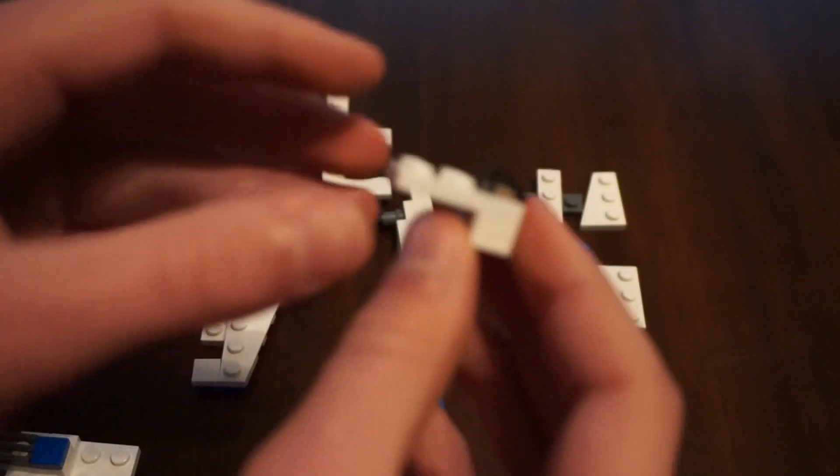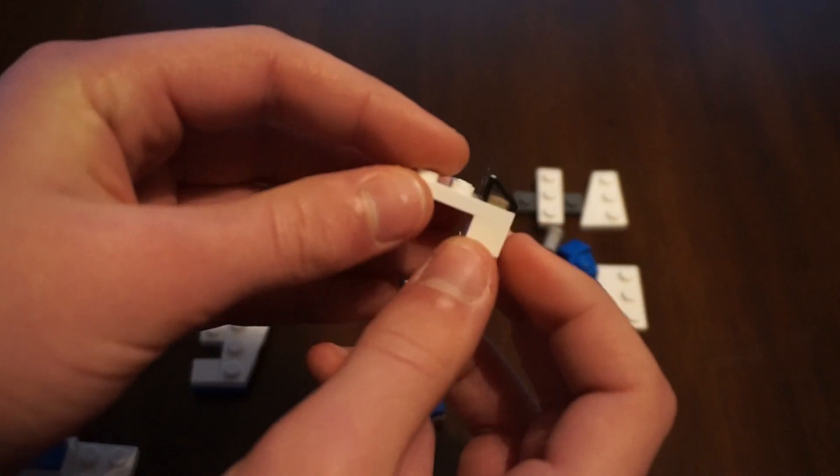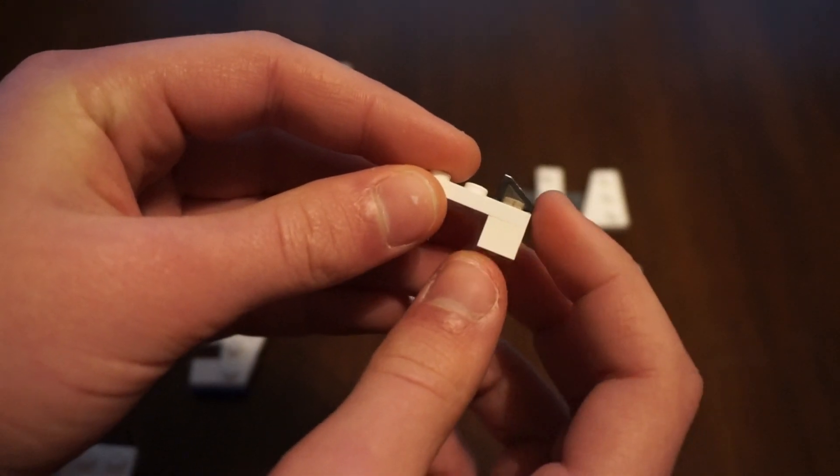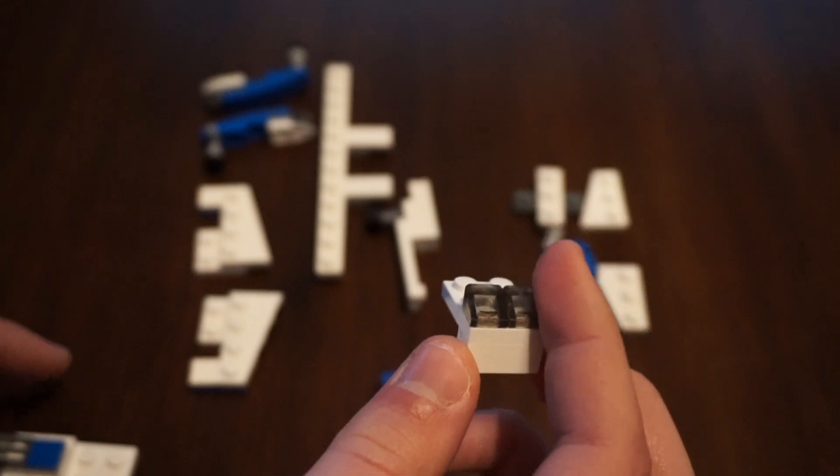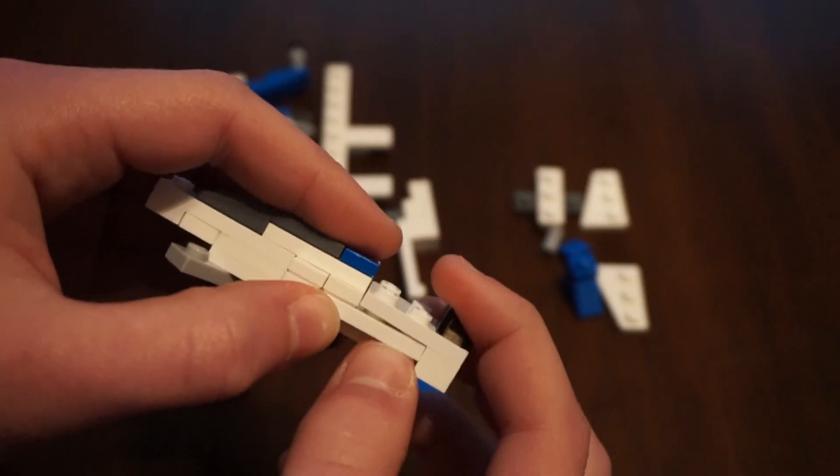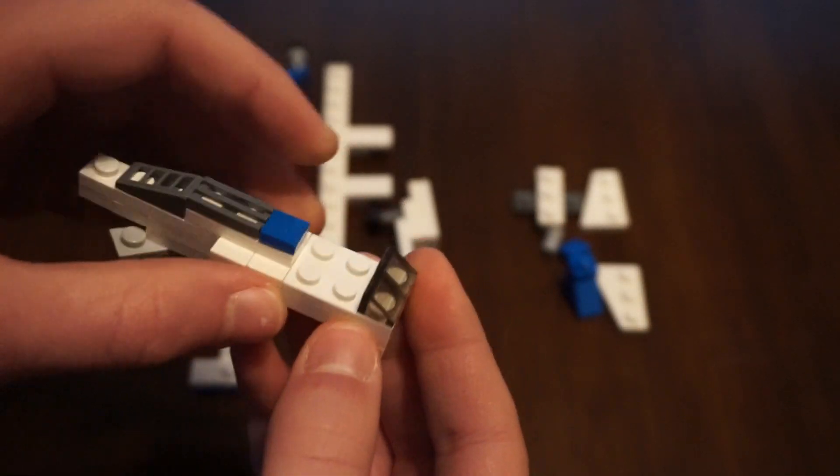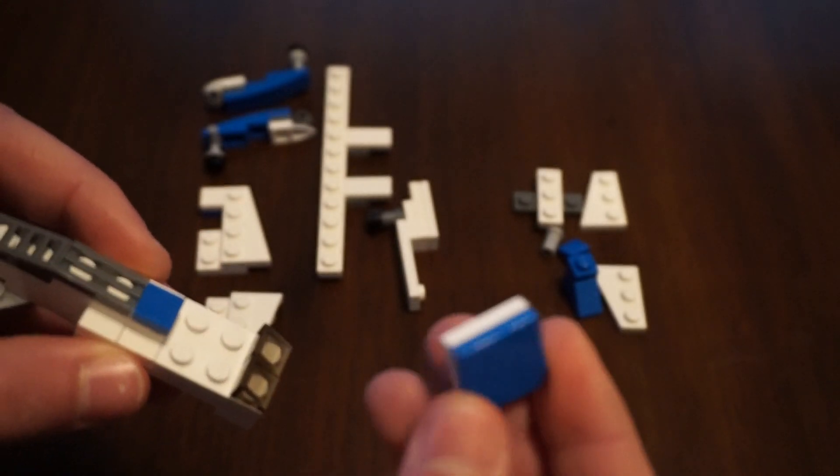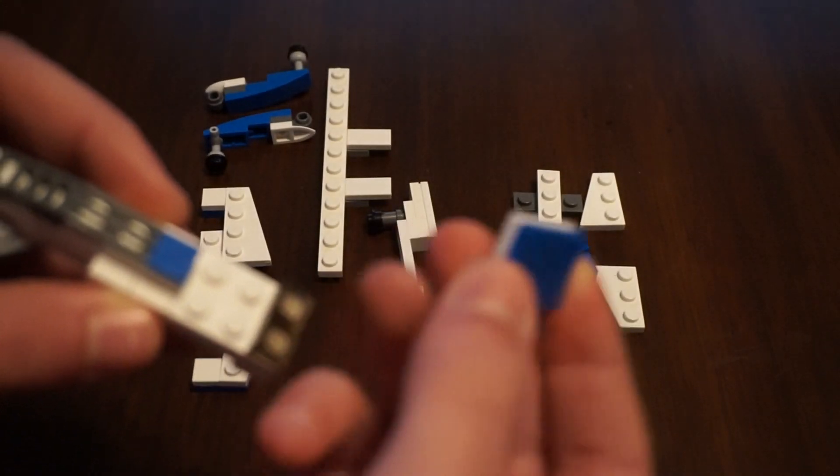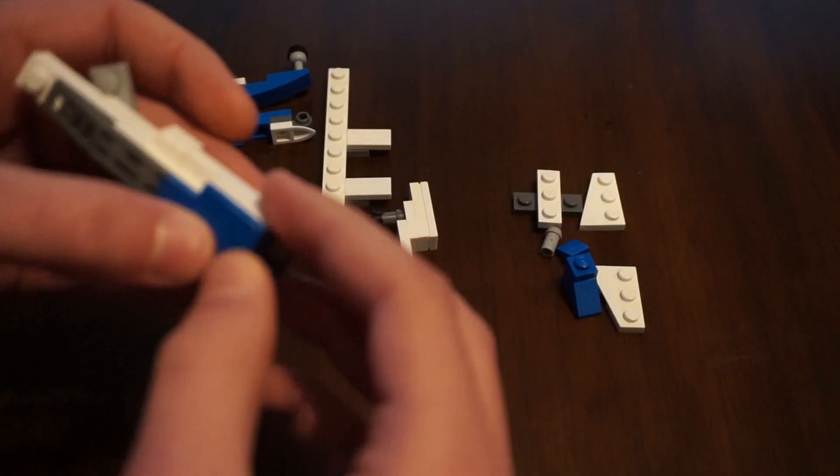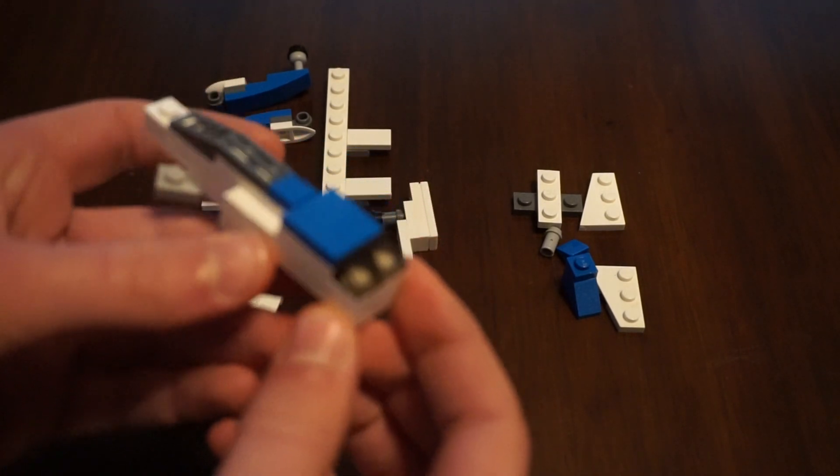Now we will get some bricks like this, one by three, and then again that's three tall with the windshield. We'll snap that on top of there along with one by four brick with a flat piece on top, there we have it.